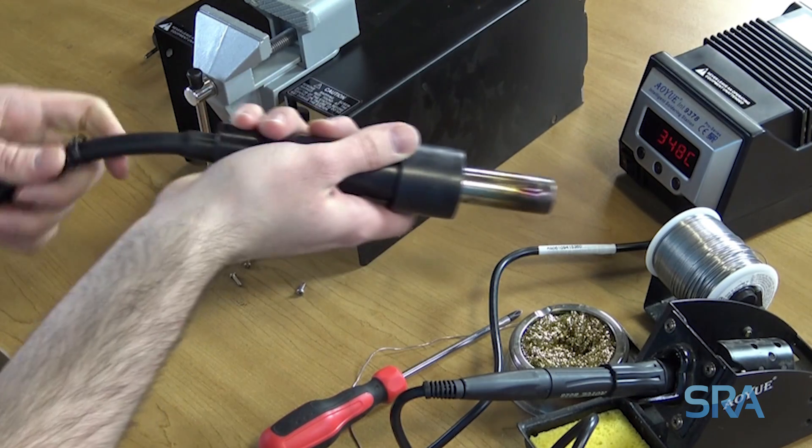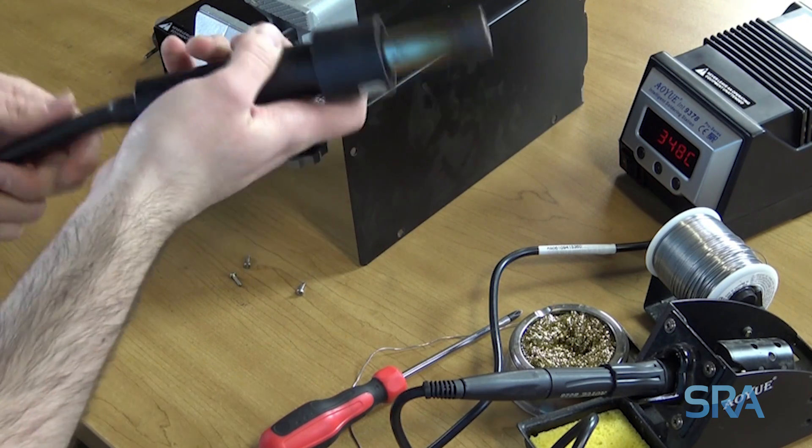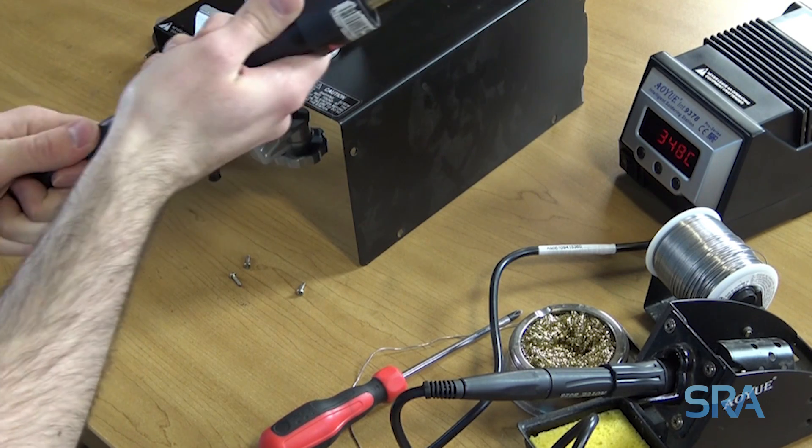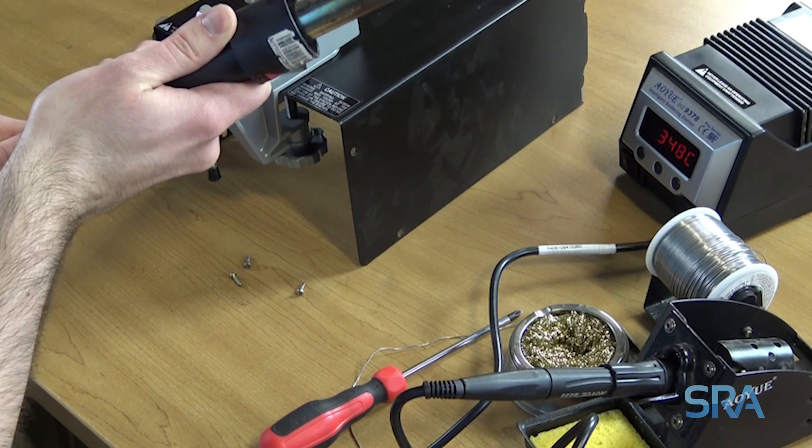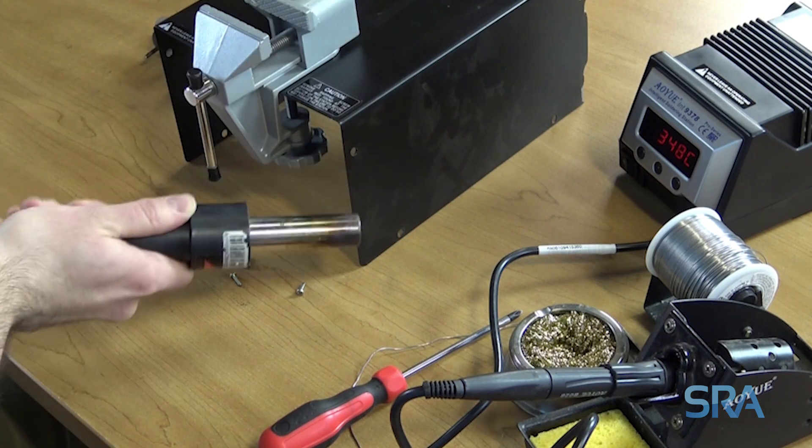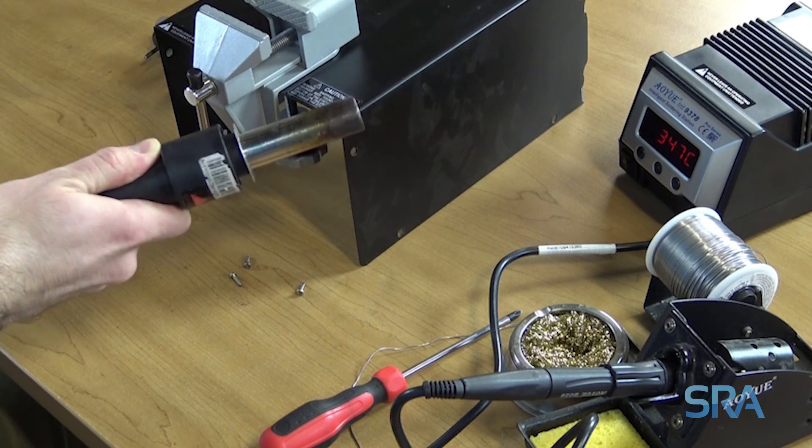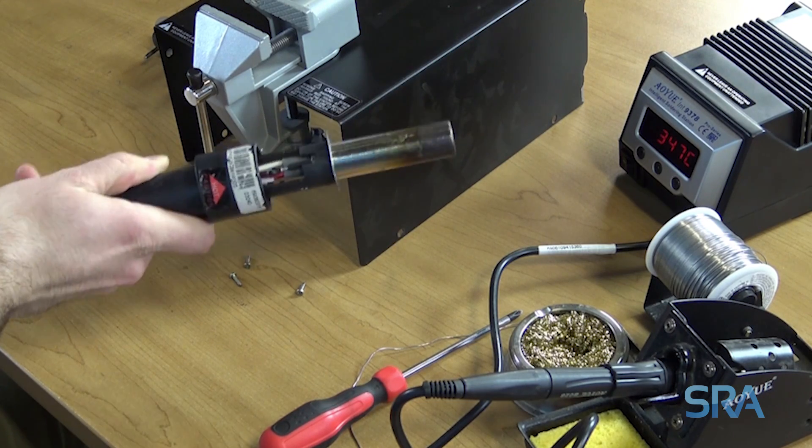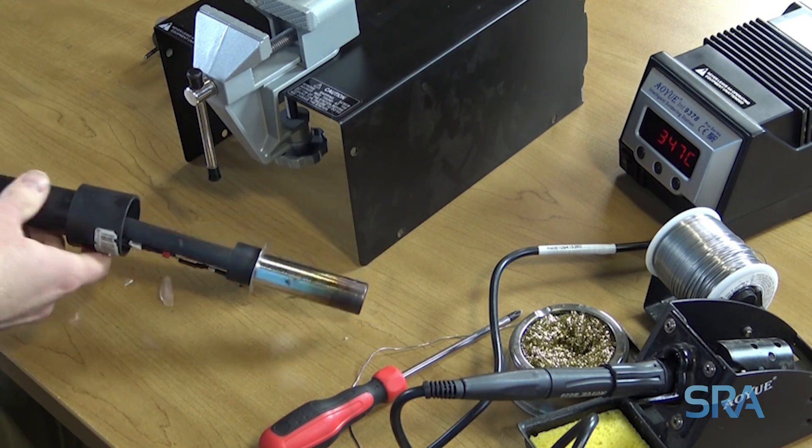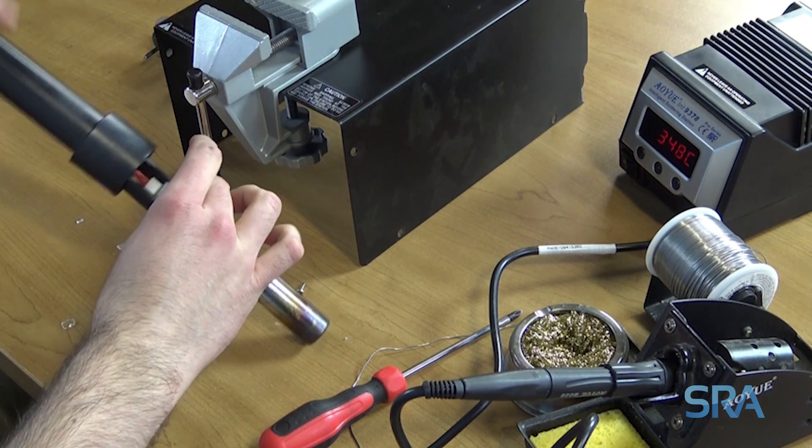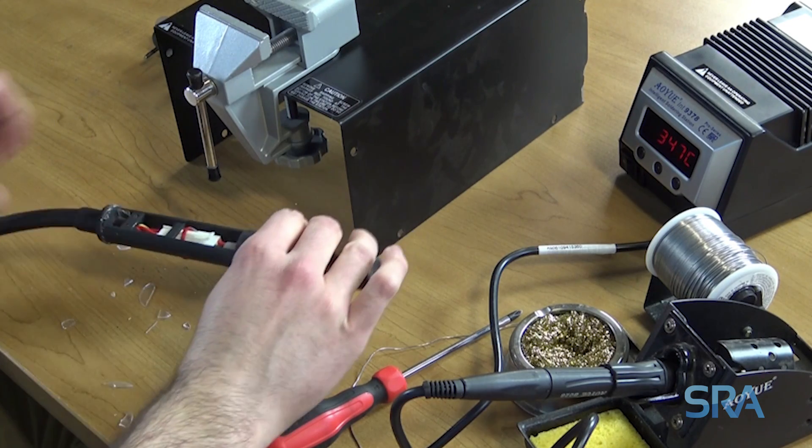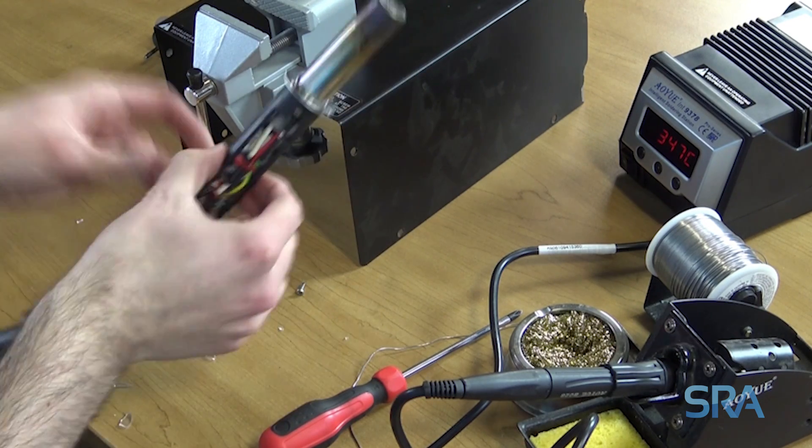We're going to take the strain relief off the cable and push up on the tube to reveal the inside. We have a broken heat tube here. There's a lot of glass debris.